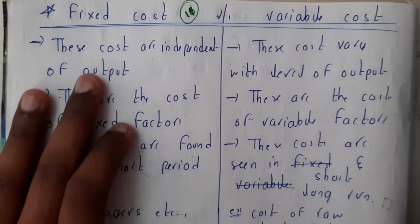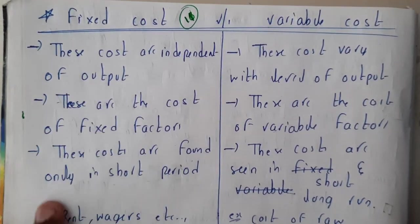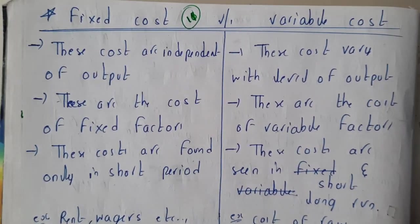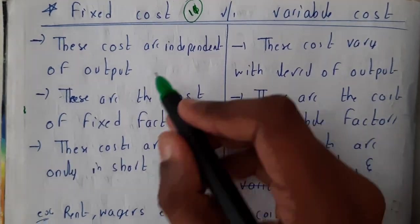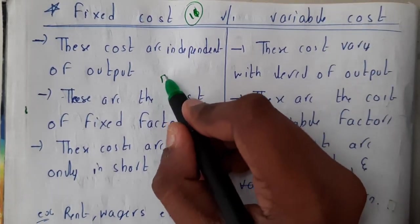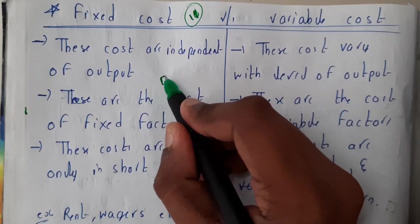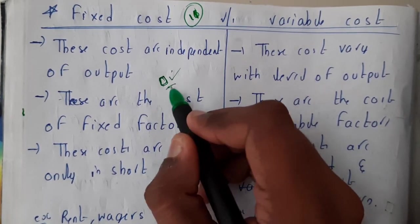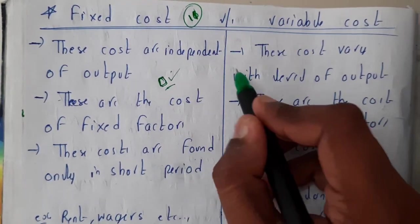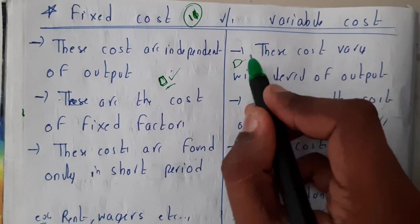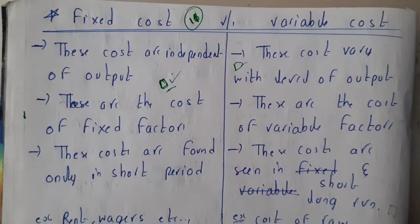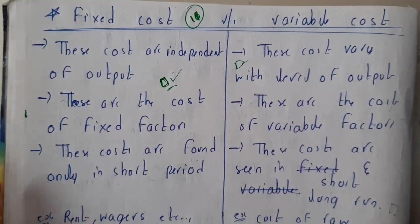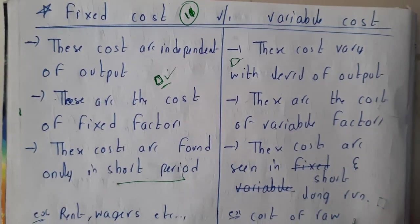What is fixed cost? Fixed cost is nothing but, for a particular product, if the cost is fixed — like even for a long time it is only 10 rupees, it is not increasing or decreasing — that kind of cost we call fixed cost. Whereas variable cost changes with respect to time or some other factor.